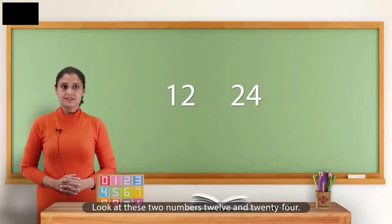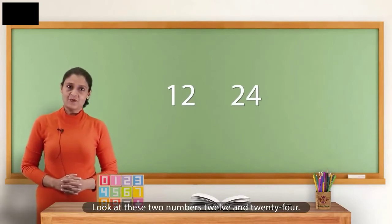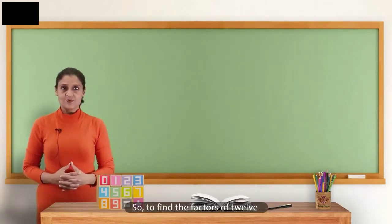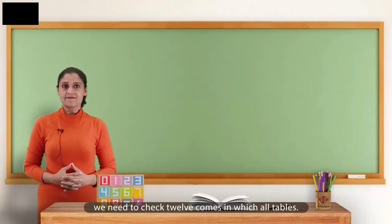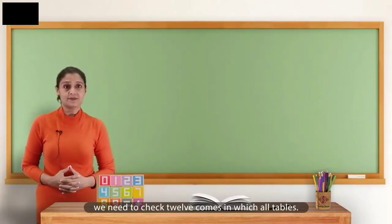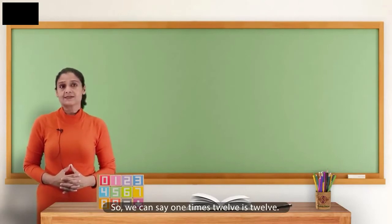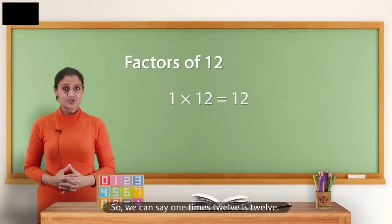Look at these two numbers, 12 and 24. So, to find the factors of 12, we need to check 12 comes in which all tables. We can say 1 times 12 is 12.